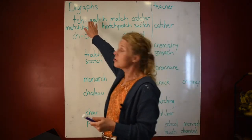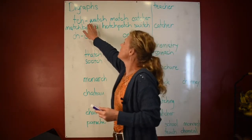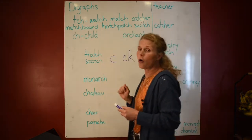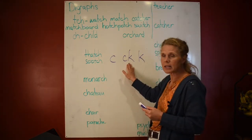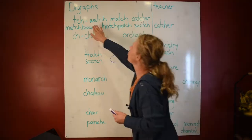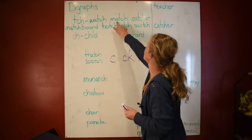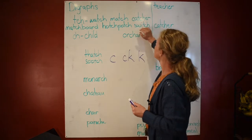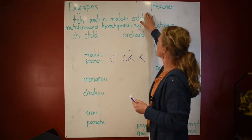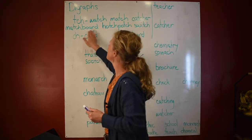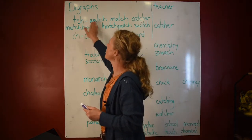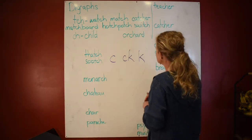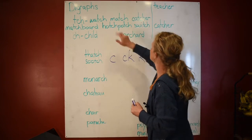Now we're going to talk about TCH. These come into the English language and are only spelled after a short vowel, just exactly like CK. So we have 'watch' — short vowel; 'match' — short vowel; 'catcher' — short vowel. You'll find them often at the end of words, but 'catcher' is a base word with a suffix added on. 'Matchboard' — short vowel. 'Hotchpotch' — short vowels. 'Switch.'